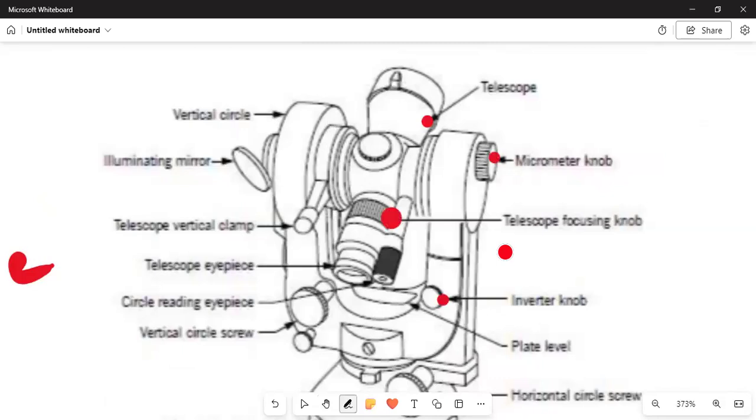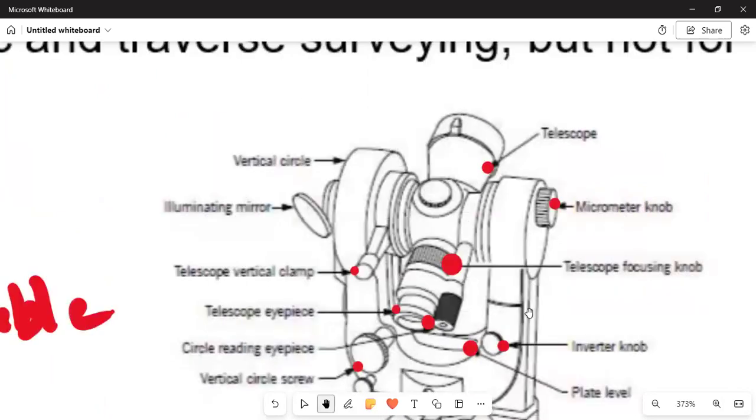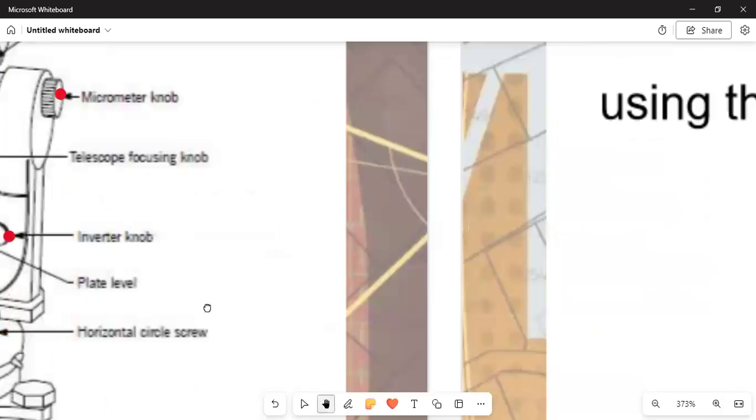We've got the inner knob downwards here. We've got the plate level which can be in this region, and we are having the horizontal circle screw. We've got the circular bubble, the vertical circle screw, the circle reading eyepiece, the telescope eyepiece, the telescope vertical clamp. All this labeling you need to know them by heart. We've got the illuminating mirror is here, and then we've got the vertical circle this side. You need to know and to label it very well without any failure.